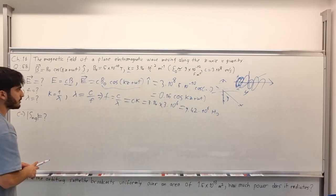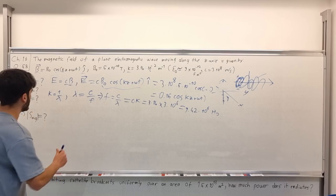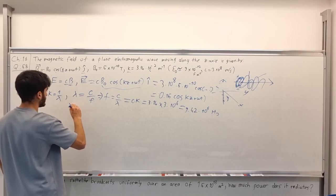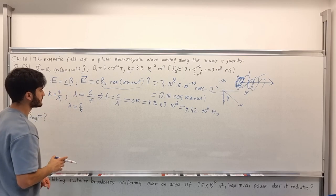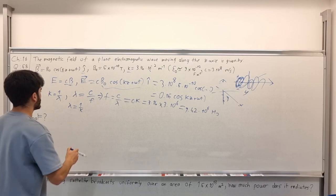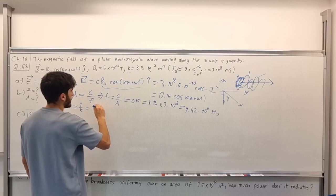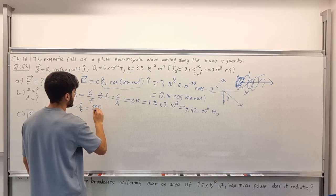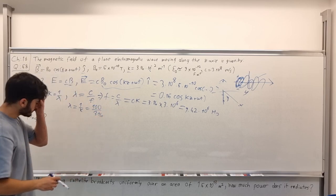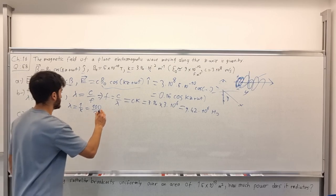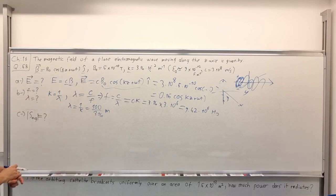Also, we can find λ = 1/k, which is 100/3.14 meters. This is the wavelength of the electromagnetic wave in meters.